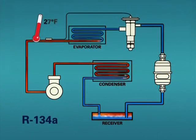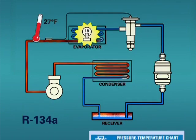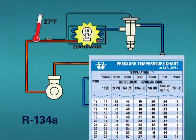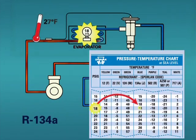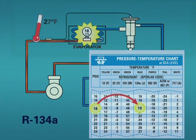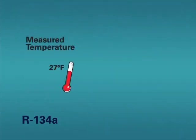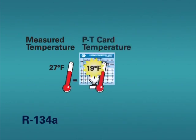To determine the amount of superheat in the vapor, simply take the difference between the measured temperature and the saturated temperature indicated by the PT card. In this case, the difference between 27 degrees Fahrenheit and 19 degrees Fahrenheit is 8 degrees Fahrenheit superheat.